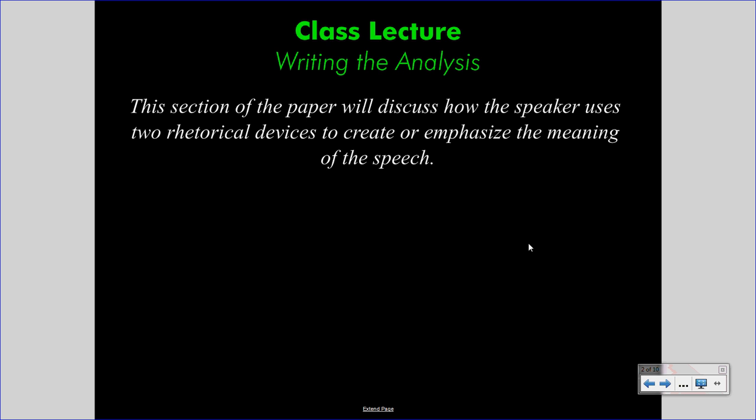Today's lecture continues to discuss the speech analysis report, and we are talking about the biggest section of the report, which is the analysis section. This section of the paper will discuss how the speaker uses two rhetorical devices to create or emphasize the meaning of the speech. You have a model example of the speech at the Brandenburg Gate by President Ronald Reagan, with access to a clean copy and one with Google Comments. The analysis section can be the most challenging and sophisticated of all the sections, but this video will detail how you can accomplish it by going step by step.